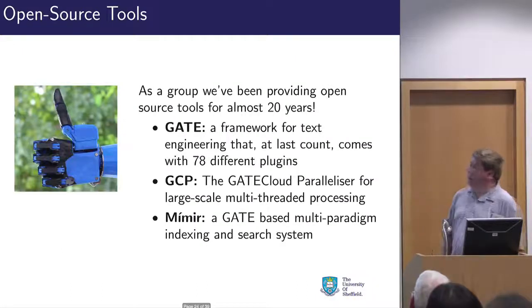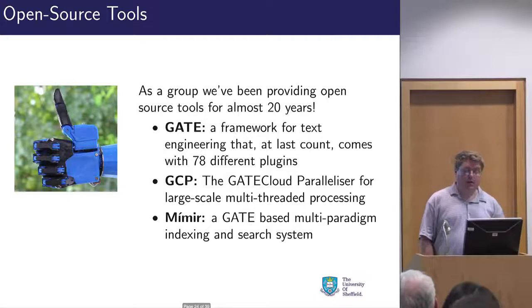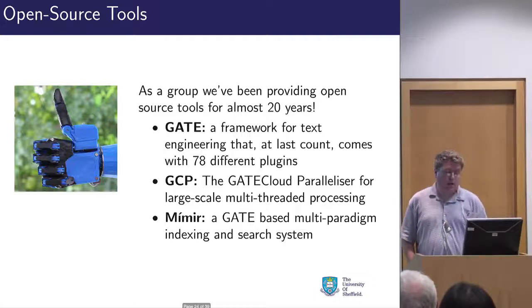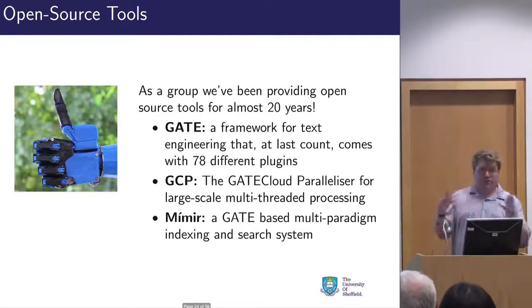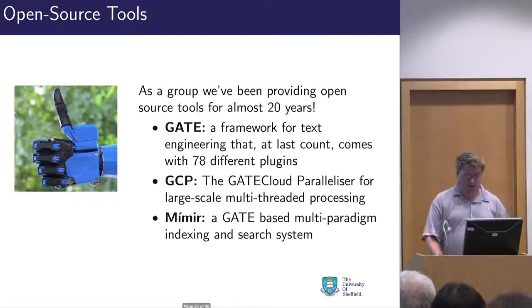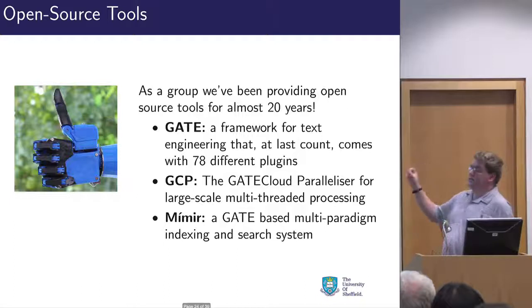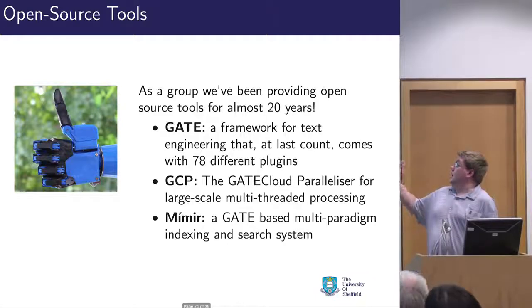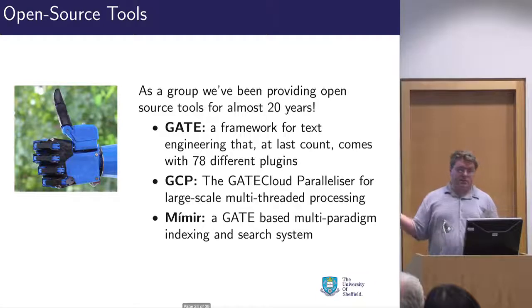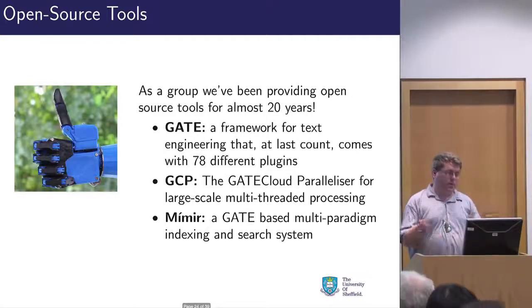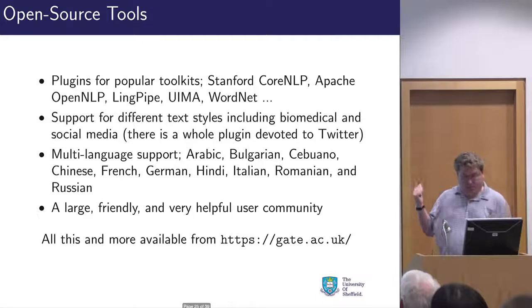What do all four examples have in common? They're all based around the open source tools we've been developing in Sheffield and giving away for the last 20 years. The main tool is GATE — a framework for text engineering that comes with 78 plugins. There's also GCP, the GATE Cloud Parallelizer, for doing large-scale work quickly, and MIMI, our newer indexing and search system used with the National Archives to combine text, ontologies, and other data into a single search.